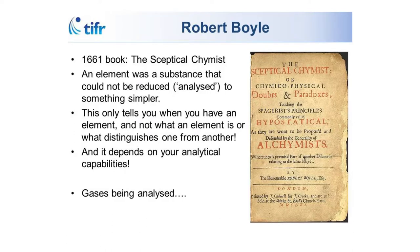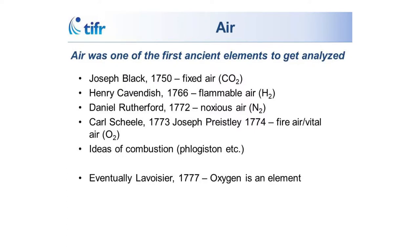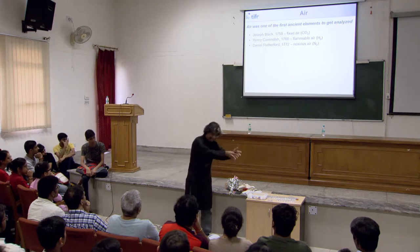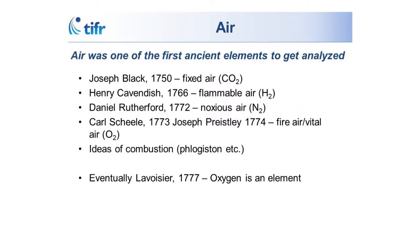Air is the first one — gases are the first things to be analyzed. Very soon, air breaks up into different components. In 1750 they find a gas that puts out fires — carbon dioxide. Cavendish discovers a gas that burns — hydrogen. Rutherford, a much older Rutherford, discovers a component of air he calls noxious or poisonous because rats die, not knowing it's because there's no oxygen. Sheele and Priestley discover oxygen a few years later, calling it fire air or vital air.